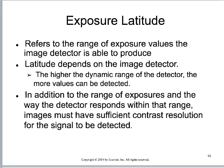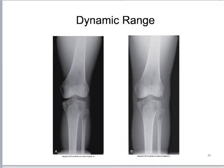Exposure latitude refers to how well the image receptor can receive a signal even in the midst of noise. This depends on the image detecting system — whether it's amorphous selenium or barium fluorohalide. The higher the dynamic range of any given system, the more values it can detect, both good values and bad values — both signal and noise. We've got to figure out how to sort out the contrast that's received.